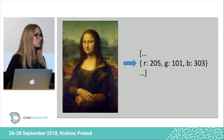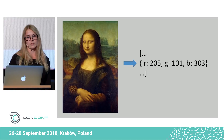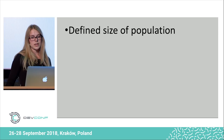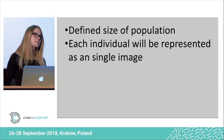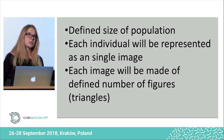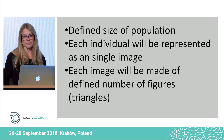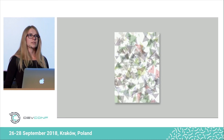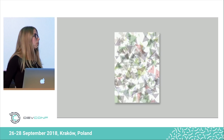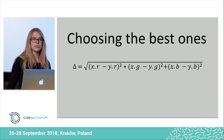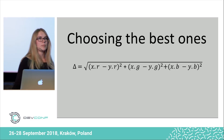So let's set up some rules. You will have a defined size of population, and each individual in this population will be represented as a single image, and each image will be made of a defined number of figures — in our case, triangles. We will start with some random triangles, and if the population size is set to 50, we will have 50 images that will look more or less like this. The key in a genetic algorithm is always choosing the best one.